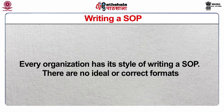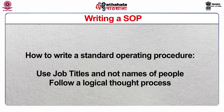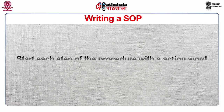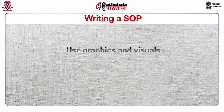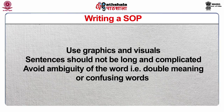Every organization has its own style of writing a SOP, and there are no ideal or correct formats. How to write a Standard Operating Procedure: use job titles and not names of people; follow a logical thought process; start each step of the procedure with an action word, for example, lift, pour, etc.; use graphics and visuals; sentences should not be long and complicated; and avoid ambiguity of words, i.e., double meanings or confusing words.